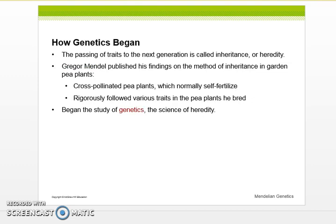So how genetics began. The passing of traits to the next generation is called inheritance or heredity. And there was this monk, his name was Gregor Mendel. He had like no life. He published his findings on the method of inheritance in garden pea plants. First, he cross-pollinated pea plants which normally self-fertilized, and then he rigorously followed various traits in those pea plants. He began the study of genetics, the science of heredity. So we call Mendel the father of heredity.